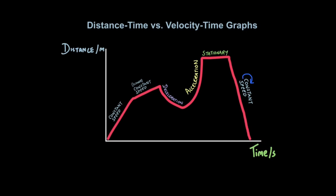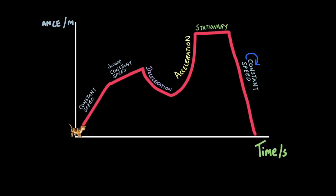Finally, let's look at distance-time graphs versus velocity-time graphs. Always look at the axes to check whether you're dealing with distance or velocity — that's the golden tip. On a distance-time graph, time is on the x-axis and distance on the y-axis. A diagonally straight line represents a constant speed, and the steeper it is, the faster the constant speed, whereas a shallower line means a slower constant speed.